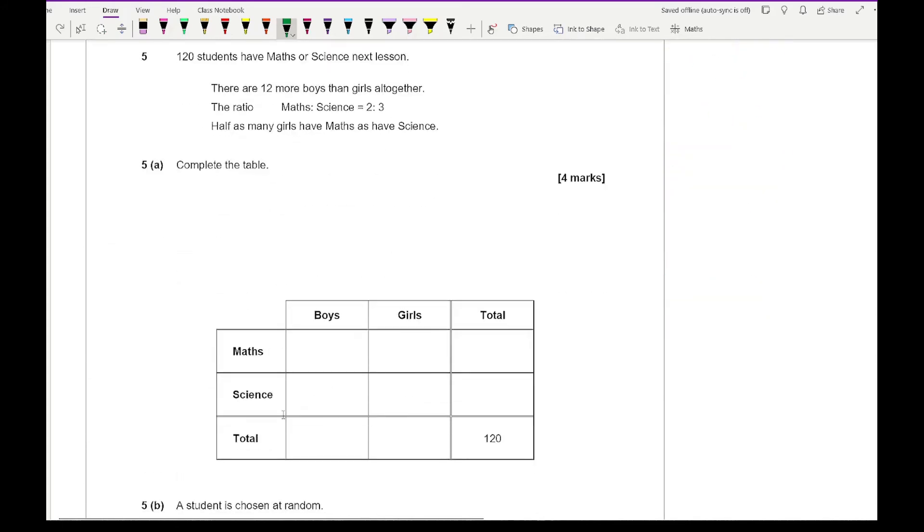Moving on to question 5, it says that 120 students have maths or science next lesson. There are 12 more boys than girls altogether. The ratio of maths to science is 2 to 3. Half as many girls have maths as have science. Complete the table. So looking at this first one, we know that there's 120 students, so these two totals need to add up to 120. And we also know that there are 12 more boys than there are girls. So if we call the number of girls x, then the number of boys is going to be x plus 12. So then we've got 2x plus 12 equals 120. So 2x is going to equal 108. So x equals 54. So this is going to be 54, and this is going to be 66.